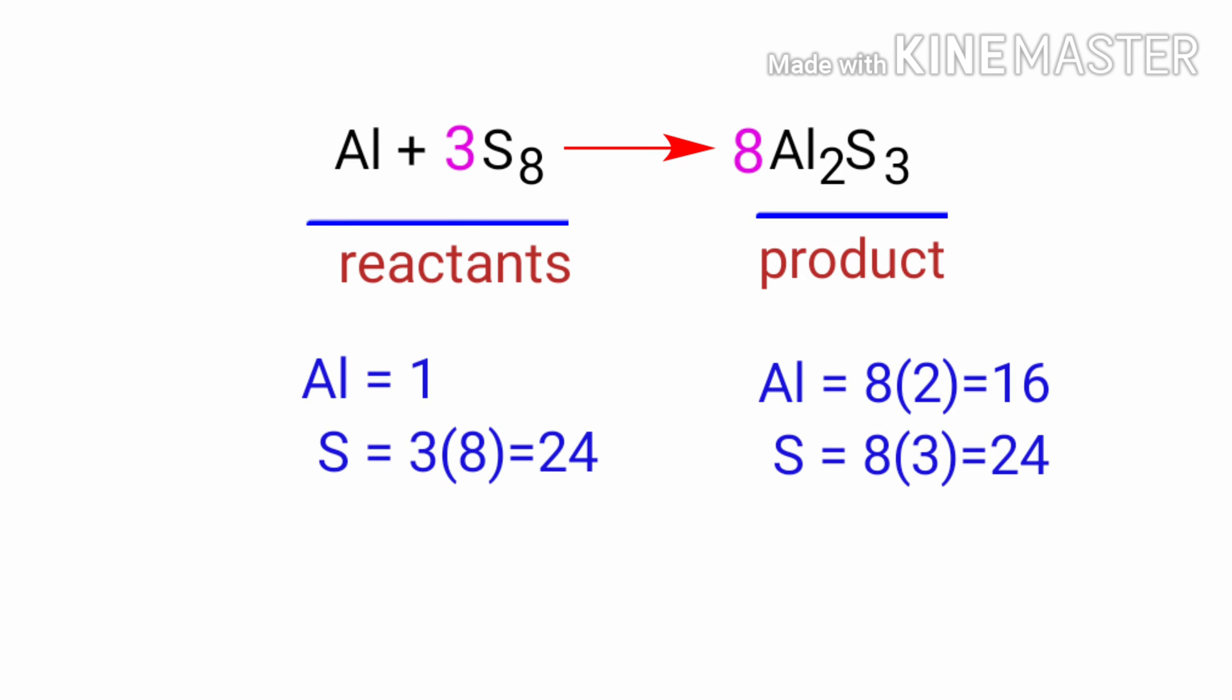The sulfur atoms are balanced. Now we need to balance the aluminum atoms. To do this, we need to put a coefficient of 16 in front of Al2S3.